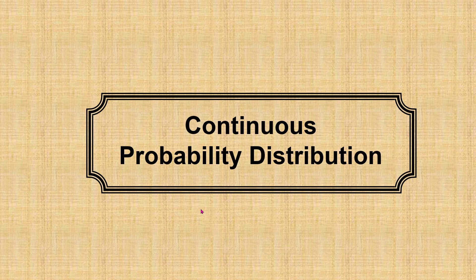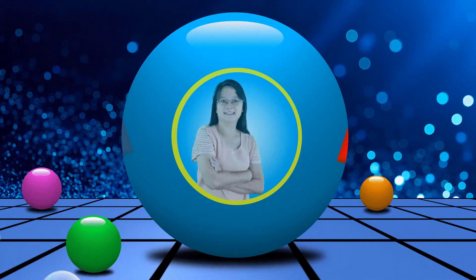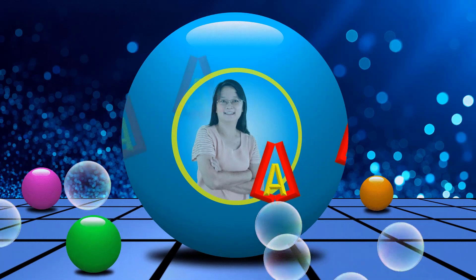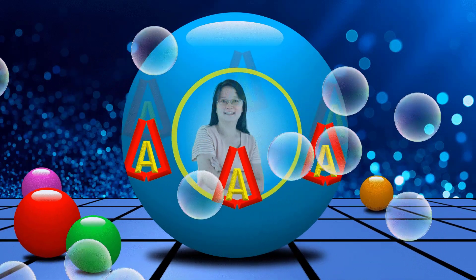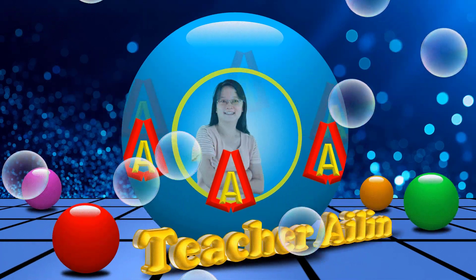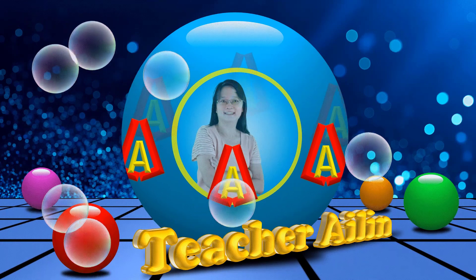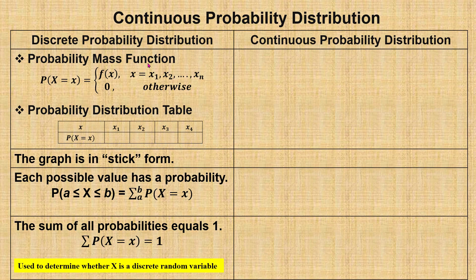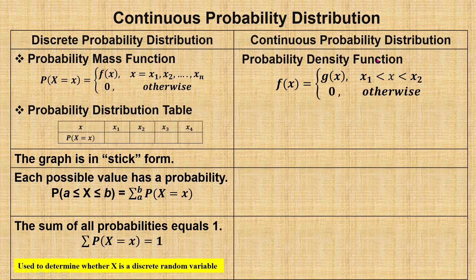In this video, I'm going to discuss continuous probability distribution. From the previous video, we learned that discrete probability distribution can be represented by a mathematical function or by a table. Continuous probability distribution can also be represented using a mathematical function, which we call the probability density function.